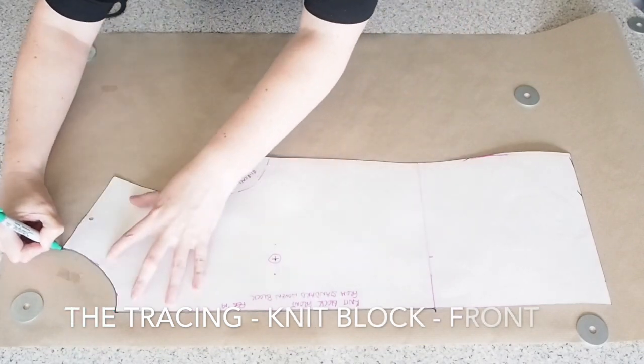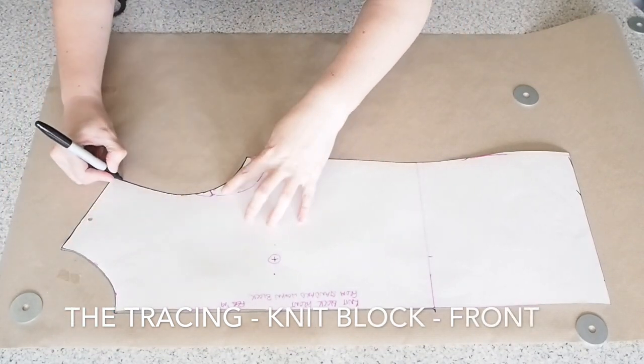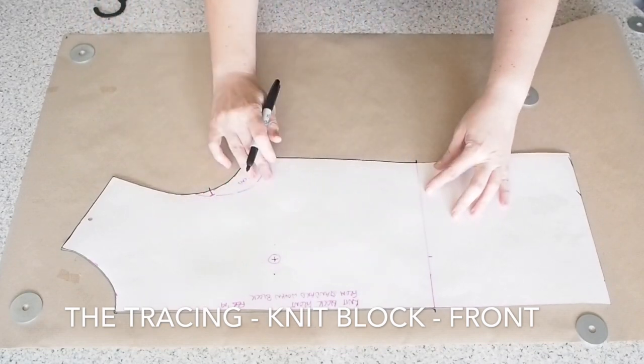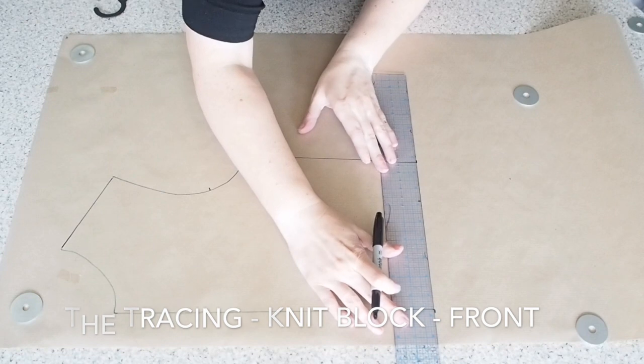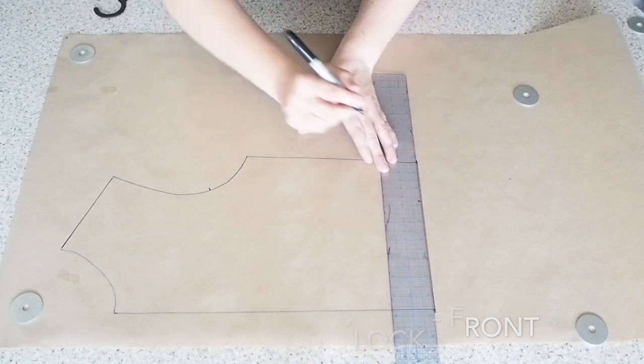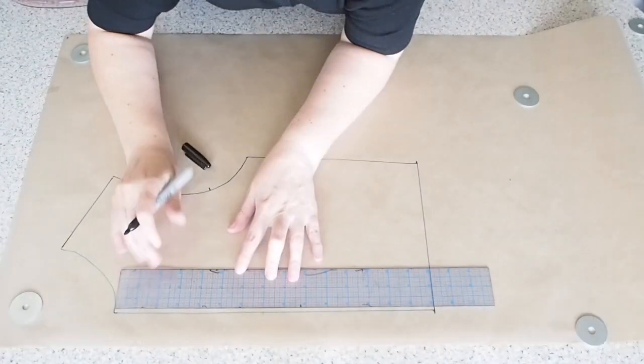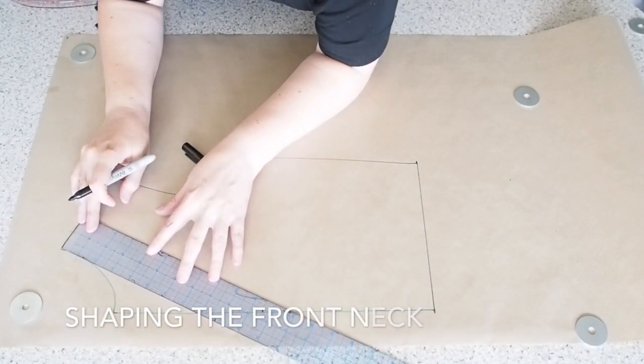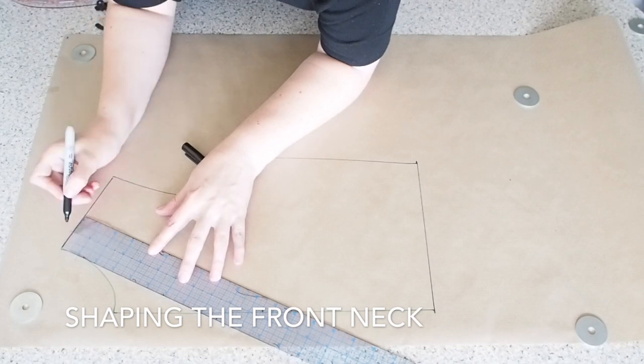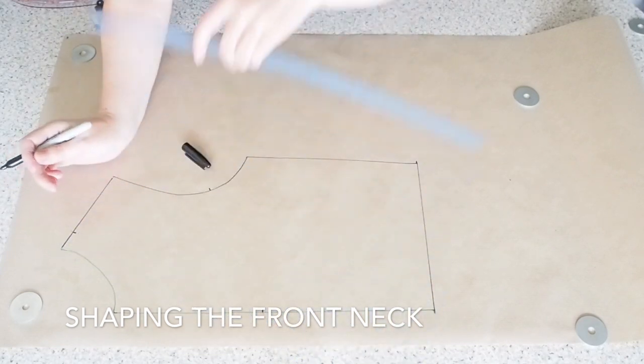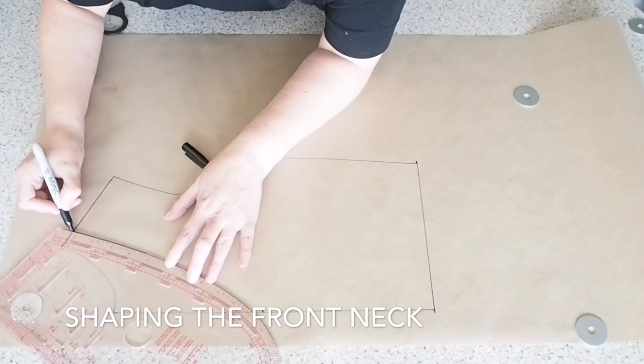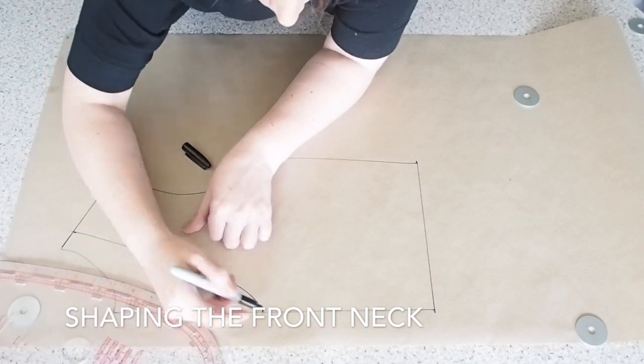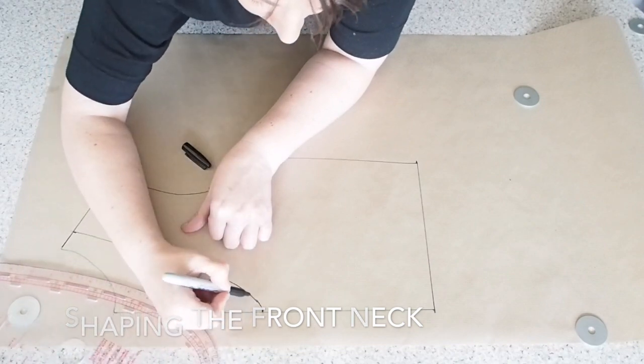So now on to the front bodice. So just tracing around the bodice from the waist up. No need to trace the skirt here. Marking in my waist seam. And now I want to change the neckline on the front as well. So I've just measured down the center front 7 inches. And measuring in from the neck point across the shoulder seam 1 inch. And now just drawing in a nice curved shape for my new neckline.